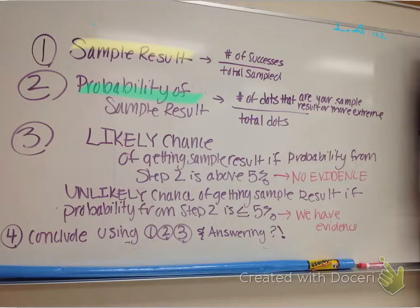That probability of getting that sample result was likely if the probability from step two is above 5%. What does that mean? That means we have no evidence for our problem. And I'll apply that to the problem in class in a second. But we have no convincing evidence for whatever that question is asking about.